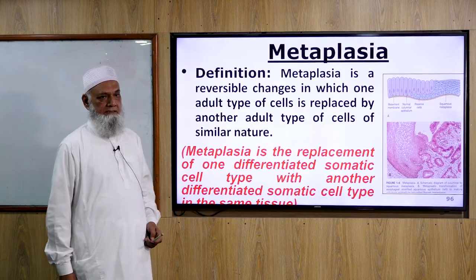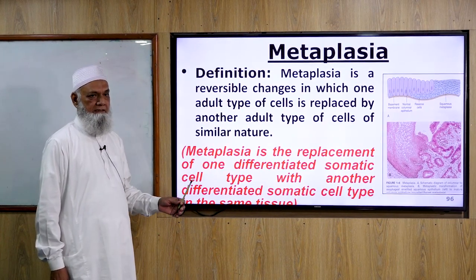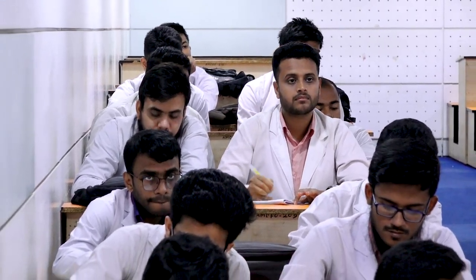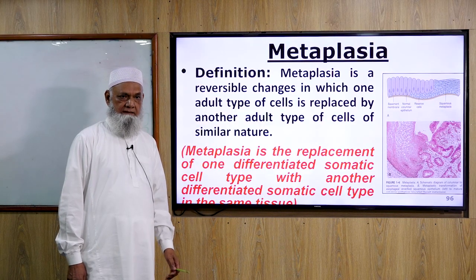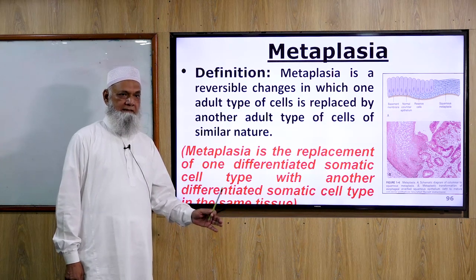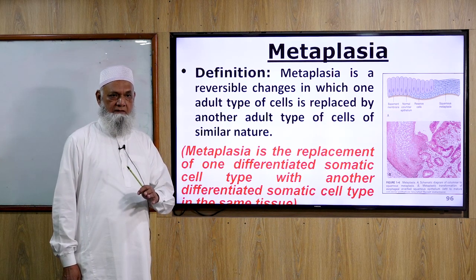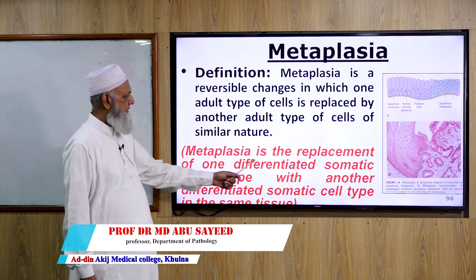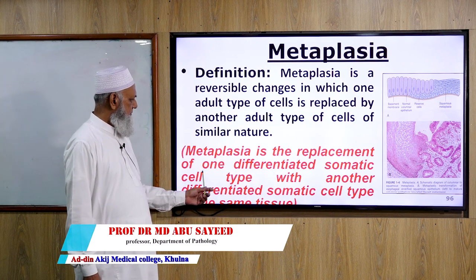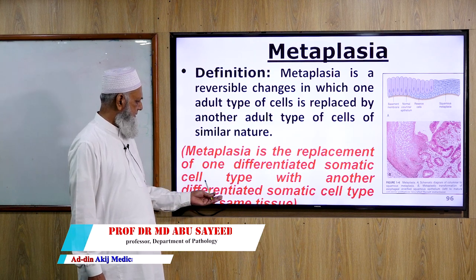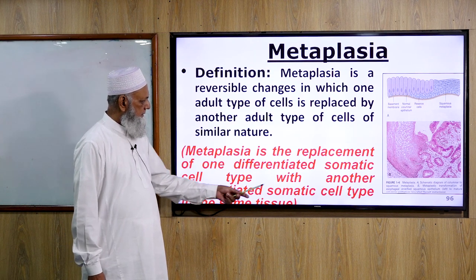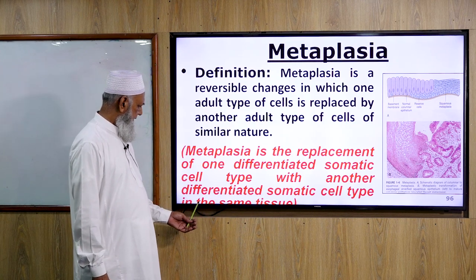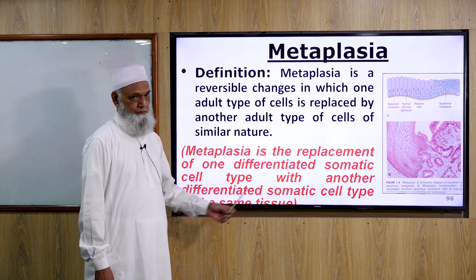What is Metaplasia? Metaplasia is a reversible change in which one adult type of cell is replaced by another adult type of cell of similar nature. Another definition: Metaplasia is the replacement of one differentiated somatic cell type with another differentiated somatic cell type in the same tissue.